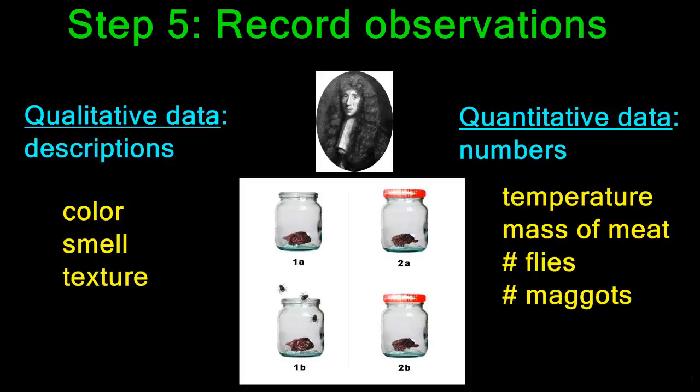In this case, the data that Redi was interested in was whether or not there were maggots in the meat at the end of the experiment. And what he happened to see in this case was that there were maggots only in the experimental group, not in the control group that had the cover on the jar. Aha! I knew spontaneous generation was not correct.